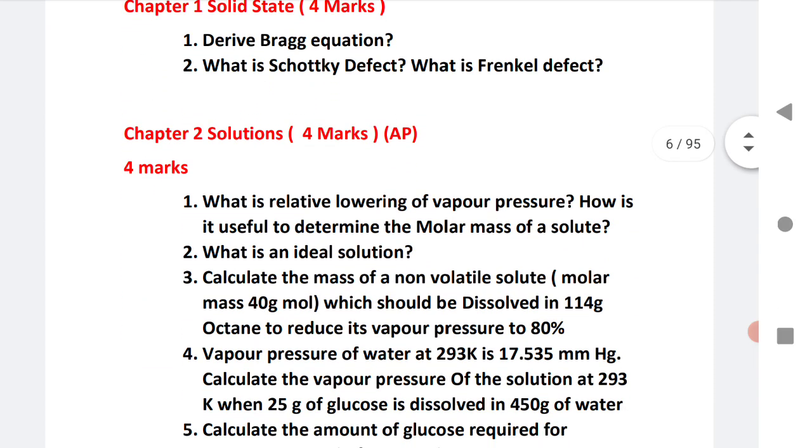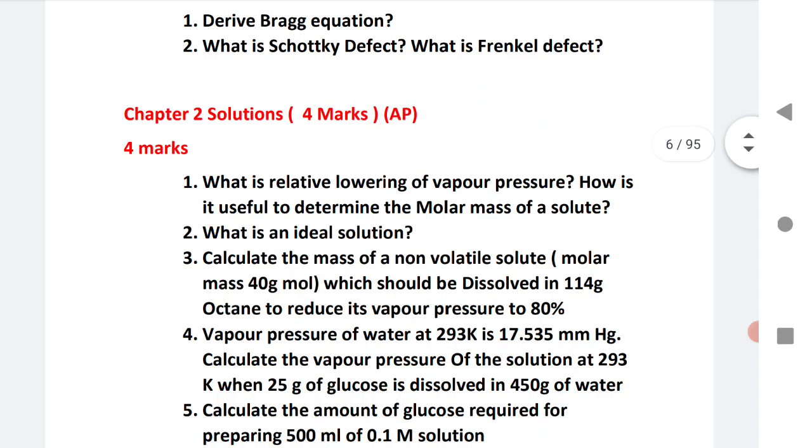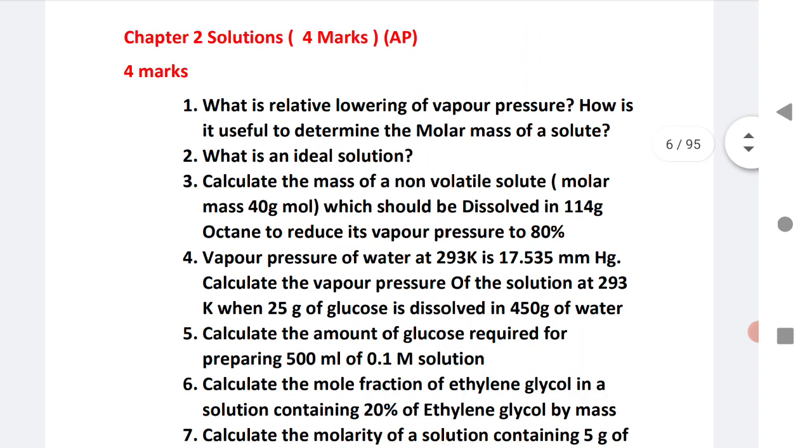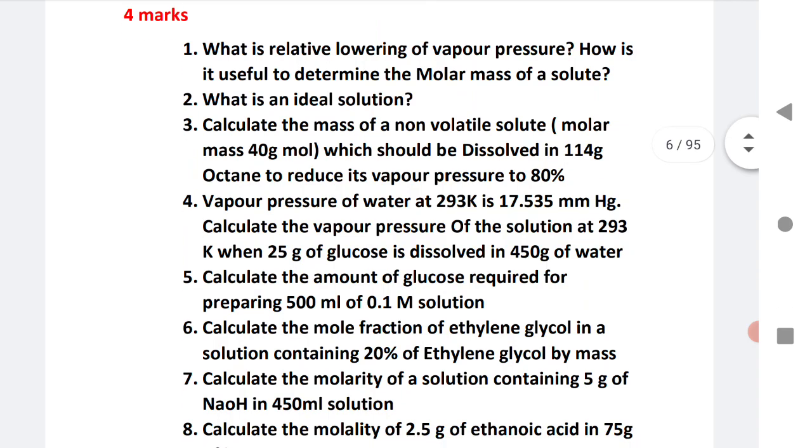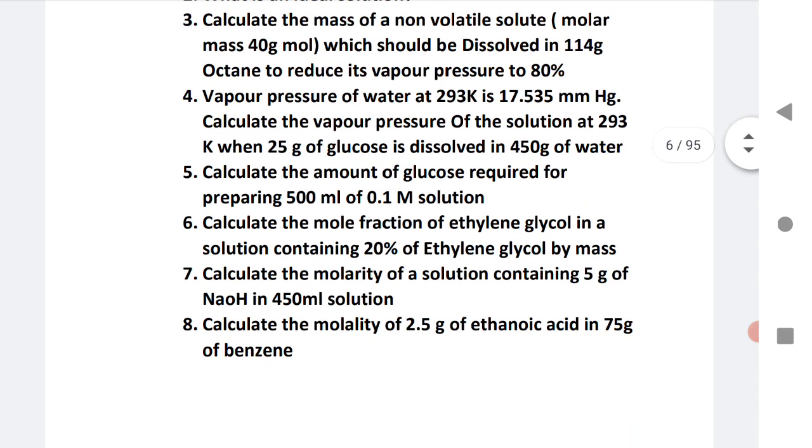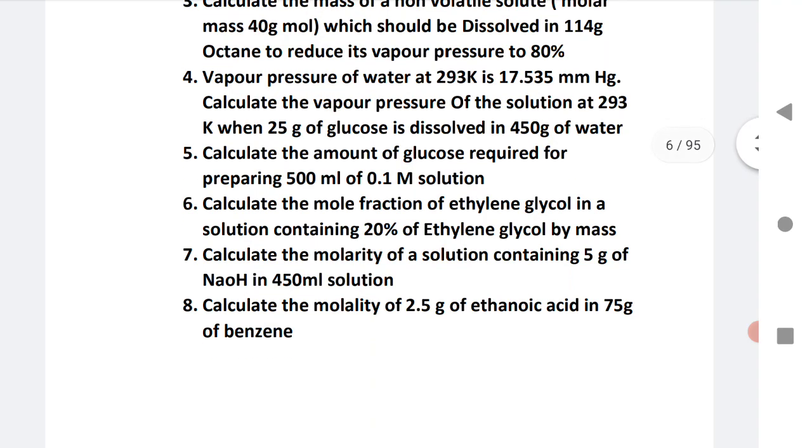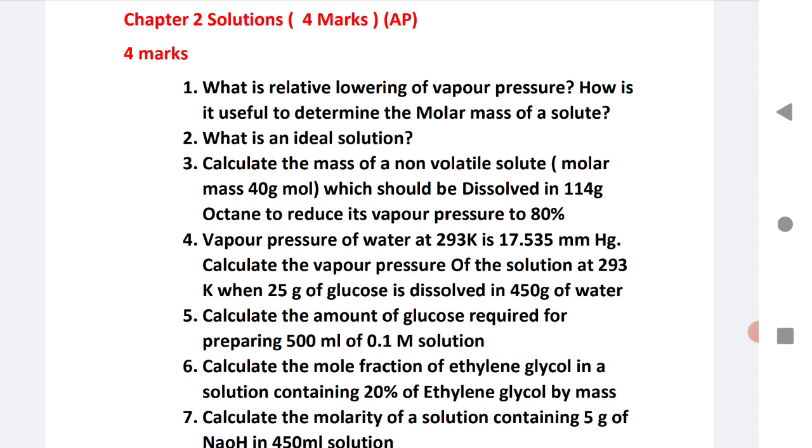Next solutions is a 4 marks question for AP, but this same question is for 8 marks for TS students. The first is RLVP Relative Lowering of Vapour Pressure. Second is ideal solution, then numerical problems. Fourth is also a numerical problem, fifth is a numerical problem. Six, seven, eight, these are numerical problems. Very important question, practice this. AP students you will get 4 marks.